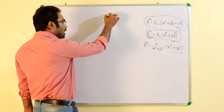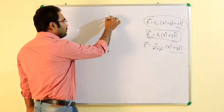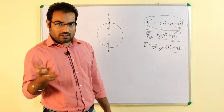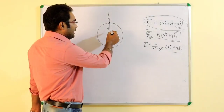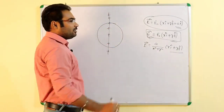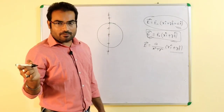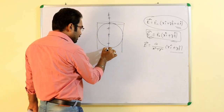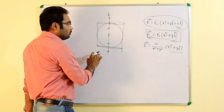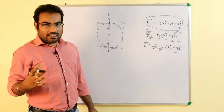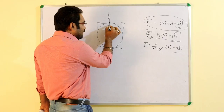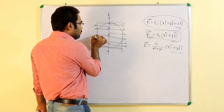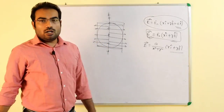अब यह समझें — यह एक line charge है और यह एक sphere का diameter है। इस sphere के through electric flux calculate करना है, तो जितना charge इसके अंदर enclosed होगा उसका electric flux होगा। इसको solve करने के लिए हम एक cylinder consider करें जो इस sphere को enclose करता हो। जितना electric field lines इस sphere को cross करेंगी वो सारी cylinder को भी cross करेंगी, तो cylinder के through flux वही होगा जो sphere के through होगा।